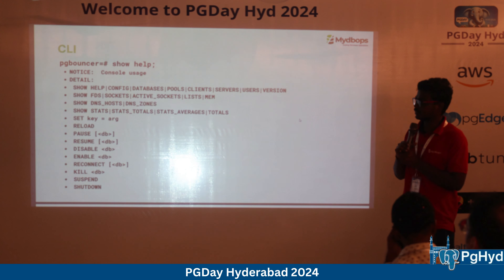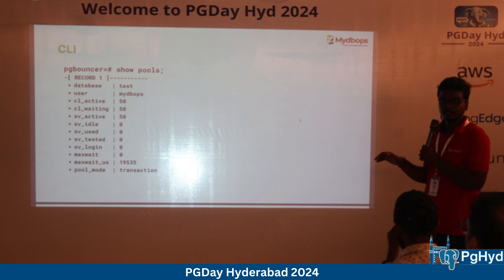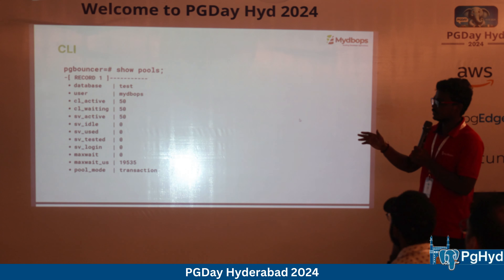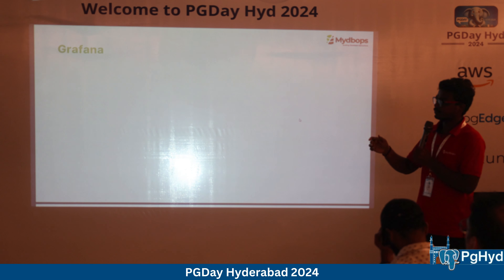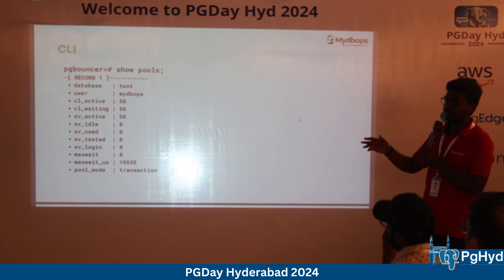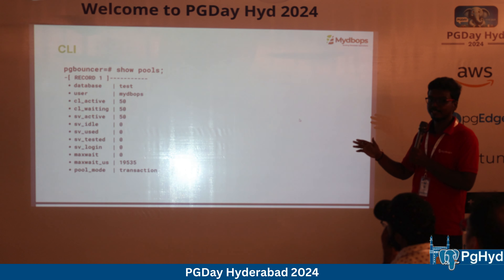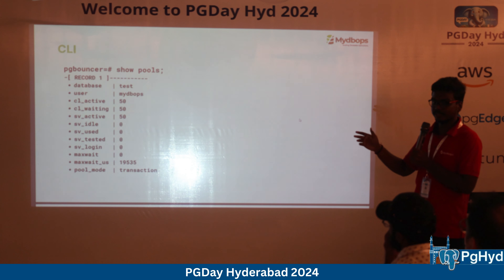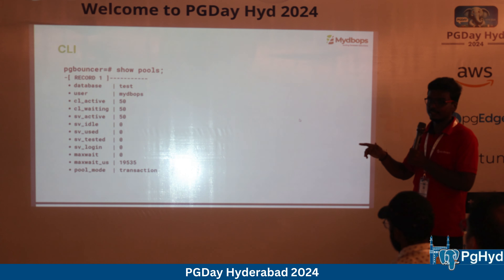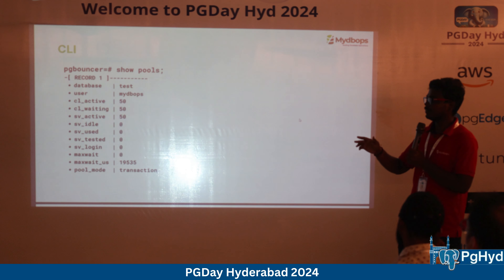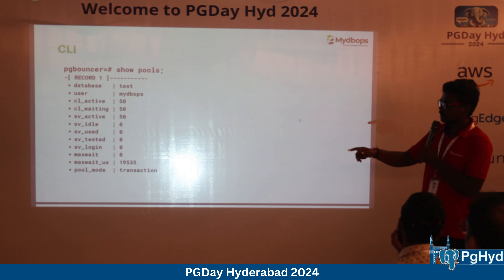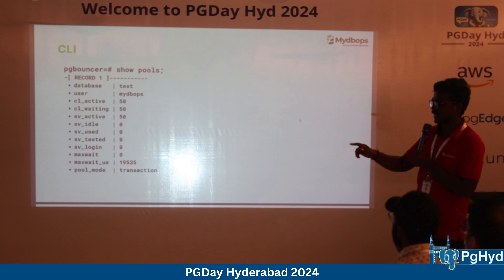One important case we've seen is application-level connection poolers conflicting with PG Bouncer at the database level. Java application pools also need to be aligned properly. We've faced customer outages caused by connection pooling mismatches. For example, if your Java application is configured for 50 connections, the database must be able to accommodate that many. If idle connections are killed externally, the application pool will keep recreating them, causing repeated connection churn.